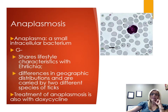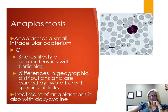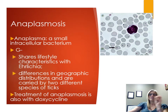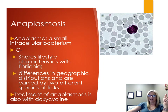Anaplasma causes anaplasmosis and is an intracellular gram-negative bacterium with characteristics similar to Ehrlichia, causing almost the same clinical manifestations. However, they are found in different geographic locations and are carried by two different types of ticks, so you generally see one or the other. Treatment is, as expected, doxycycline.